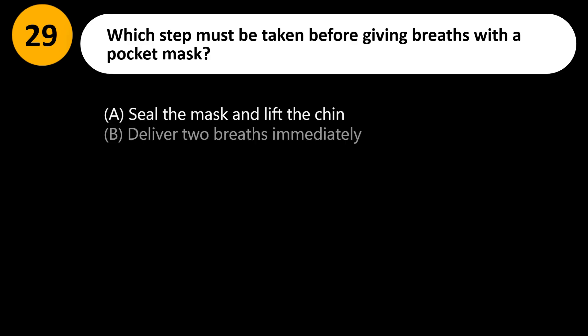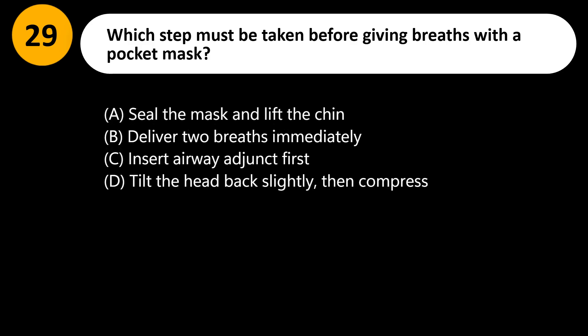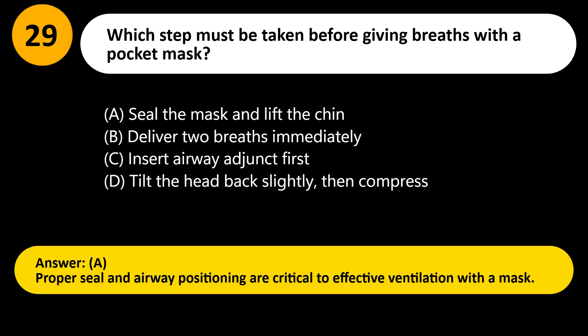Which step must be taken before giving breaths with a pocket mask? A) Seal the mask and lift the chin, B) Deliver two breaths immediately, C) Insert airway adjunct first, D) Tilt the head back slightly then compress. Answer: A. Proper seal and airway positioning are critical to effective ventilation with a mask.